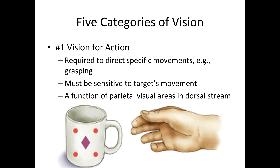Vision for action is also sensitive to the movement of a target. When trying to catch a moving ball, you need specific information about its location, speed, and shape. For instance, a basketball might require two hands while a tennis ball requires one. Vision for action is a function of the parietal visual areas in the dorsal stream — definitely remember that.